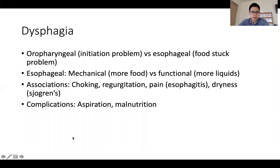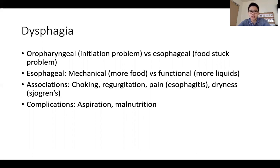Next, we talk about dysphagia. Dysphagia can be approached from whether it's an oropharyngeal problem, where initiation is usually the issue patients face, or whether it's an esophageal cause, where food feels as though it's getting stuck. For esophageal dysphagia, it can either be mechanical — normally affecting solid foods — or functional, where liquids are predominantly affected first. Associations to look out for include choking, regurgitation, pain suggesting esophagitis, and dryness effects in Sjögren's syndrome. Complications could include aspiration and malnutrition.